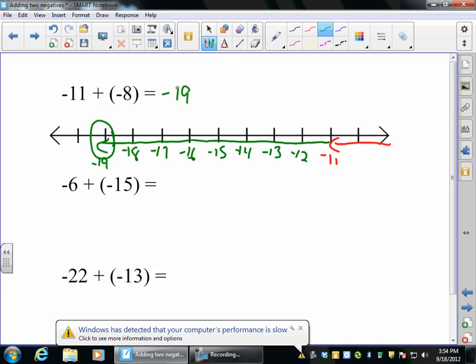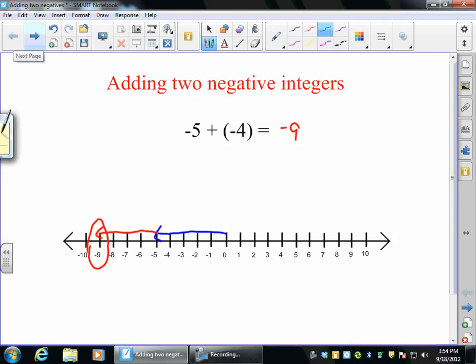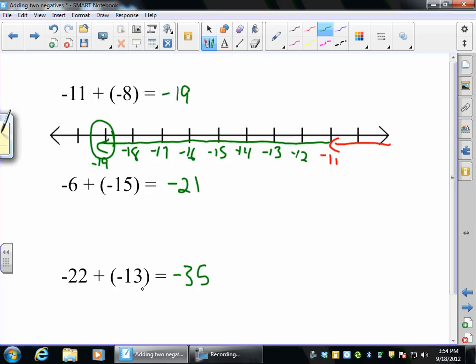Okay, so the first one here, negative 6 plus negative 15, when I add those together I should get a negative 21. And negative 22 plus negative 13 should give me a negative 35. Now we've had four different problems that we've done. I did the one back here, negative 5 plus negative 4 is negative 9, negative 11 and 8 is negative 19, and these two.